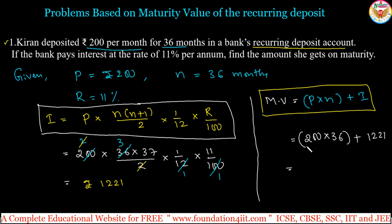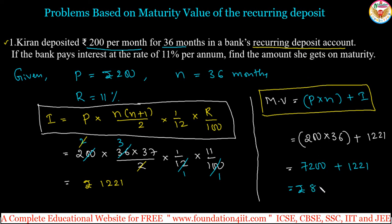Simplifying: 200 × 36 equals 7200. Then 7200 + 1221 — by adding this, we get the amount Kiran will receive at the time of maturity, which is rupees 8,421. This is the maturity value.